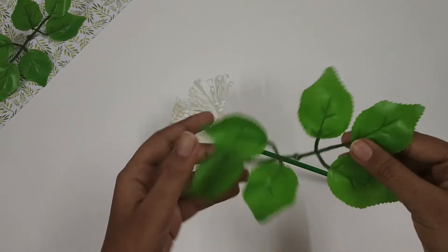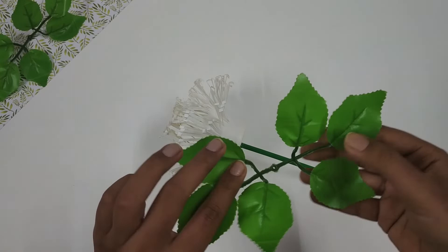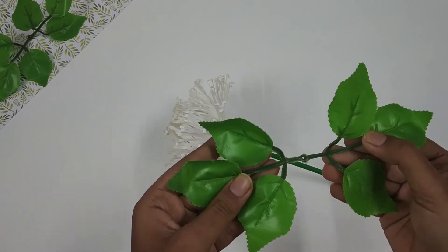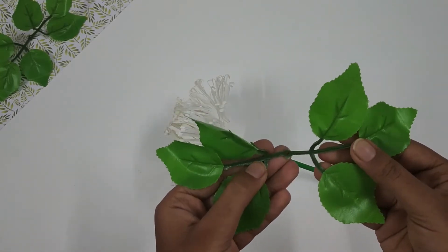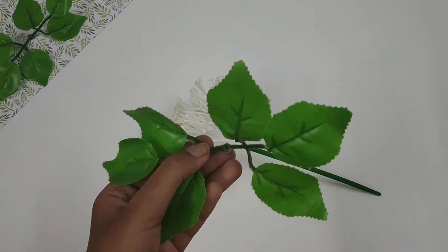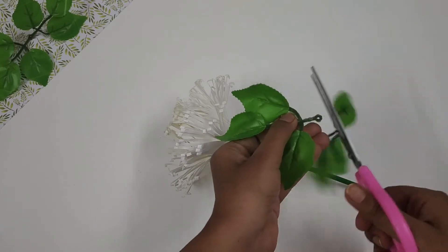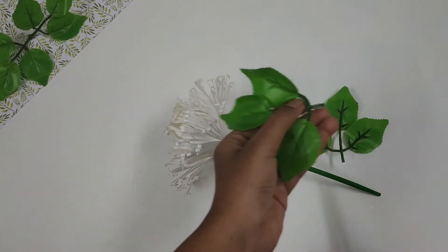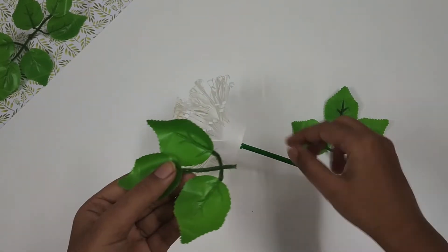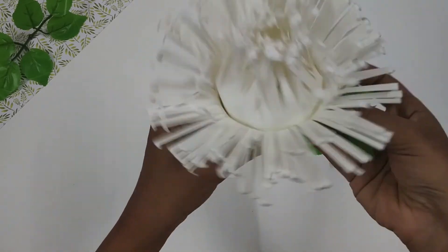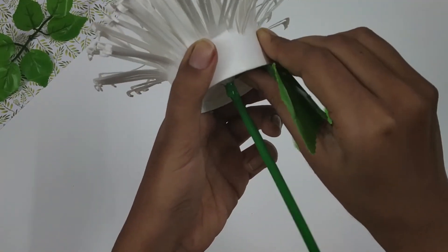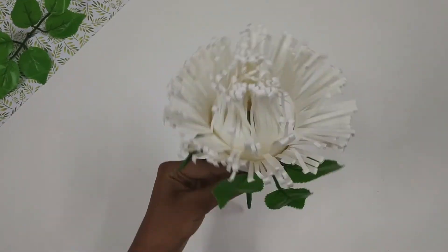Next, I'm going to add some leaves. Here I have some artificial leaves. You can make your own leaves if you want out of cardstock, foam paper, or any other material. Now I'm going to cut the leaves out like this. Next, I'm going to apply some hot glue and attach it below the flower like this.